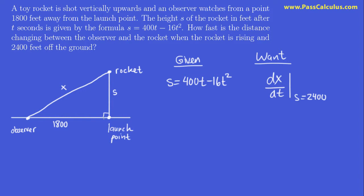Well, the obvious relationship between these variables is found by Pythagoras' theorem. So we know that x² = 1800² + s². Let's implicitly differentiate that with respect to time. So 2x(dx/dt). The derivative of this with respect to time is just zero because it's a constant. And over here we have similarly 2s(ds/dt).